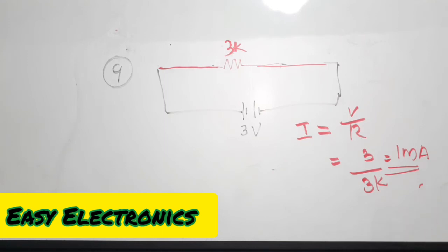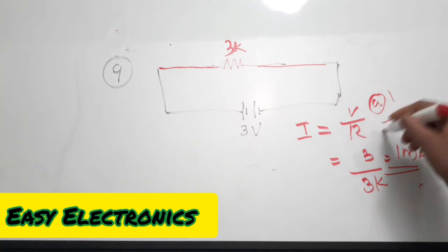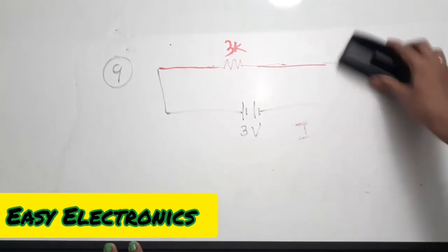If you look closely at the question, the total current is asked in milliamperes, so the options are just numbers: 1, 2, 3, and 4. You have to select option A, which is 1 milliampere. The correct answer for the ninth question is option A. Moving on to the tenth question.